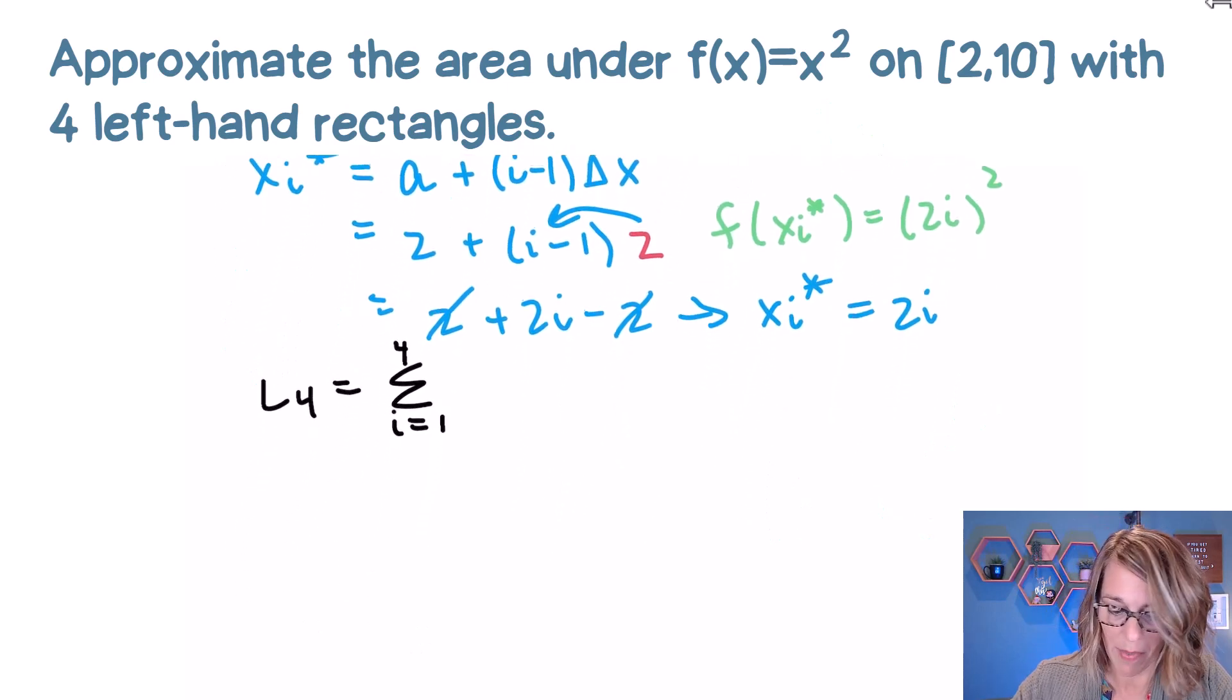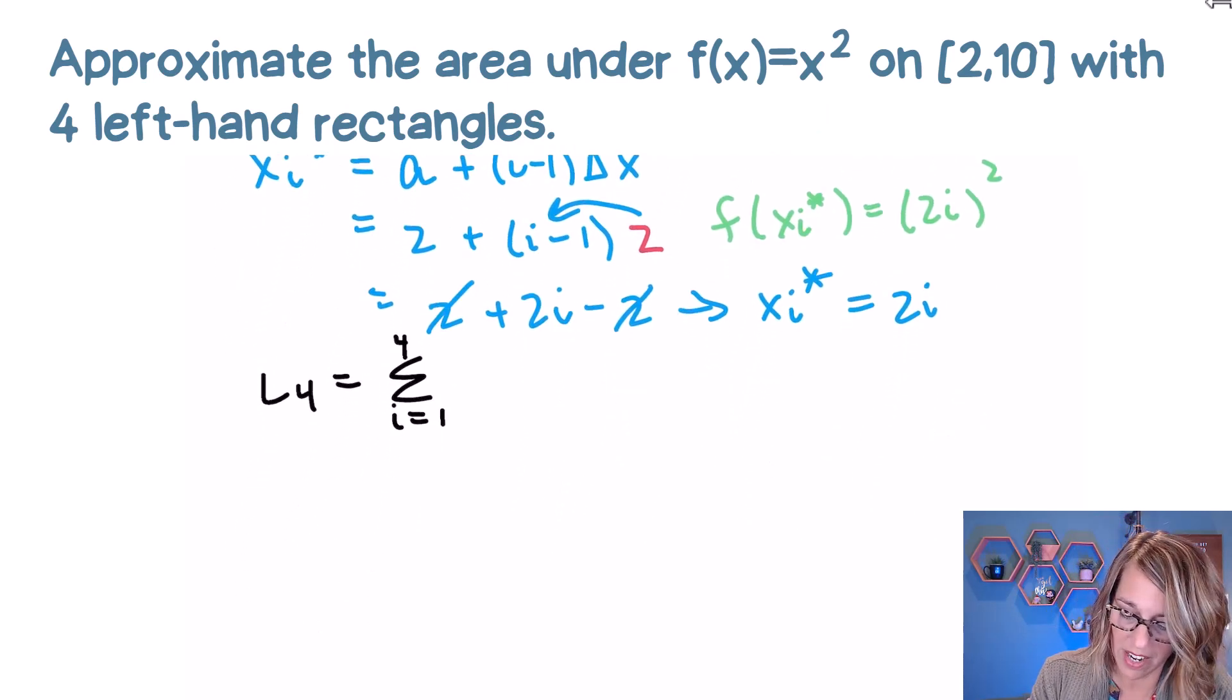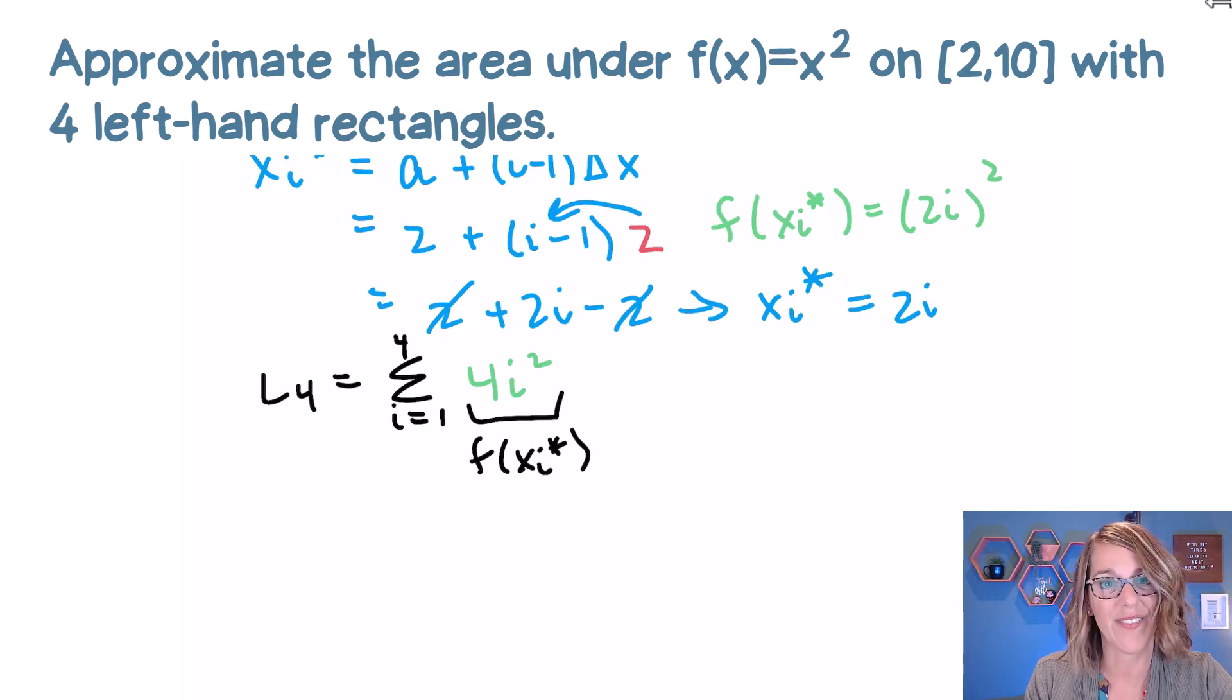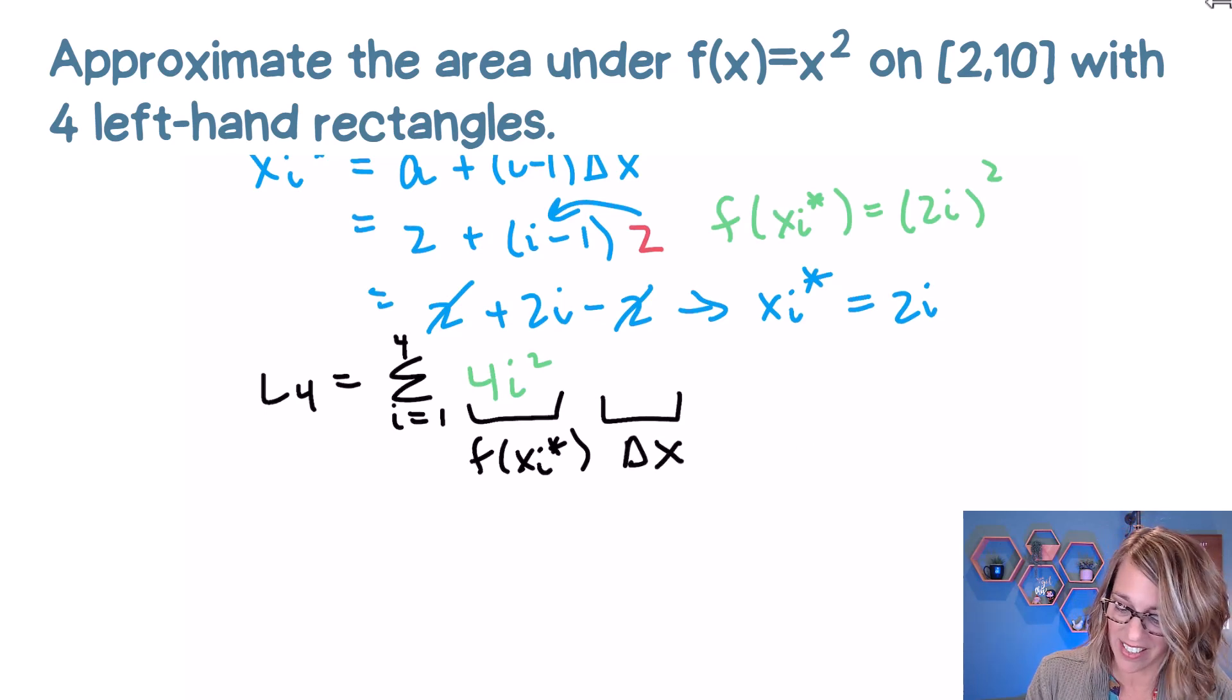So as I put that into my summation, I want to put this in as a four i squared. So that replaces our f of x sub i star, that left hand sample point. And next, I want to put in our delta x. So delta x, we know that delta x is equal to a two.